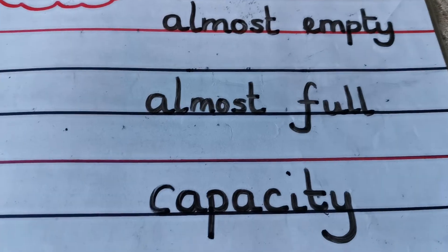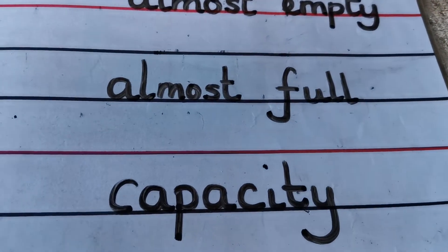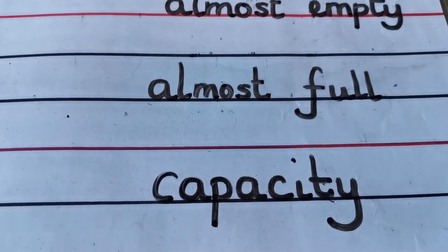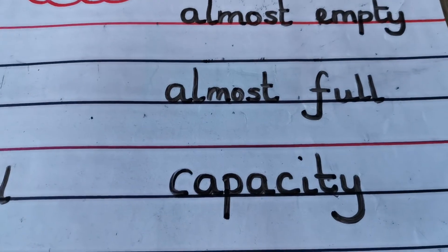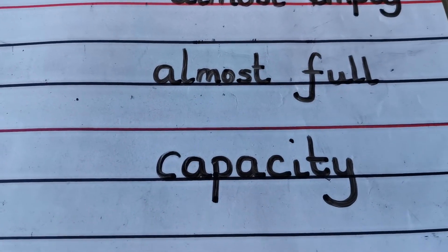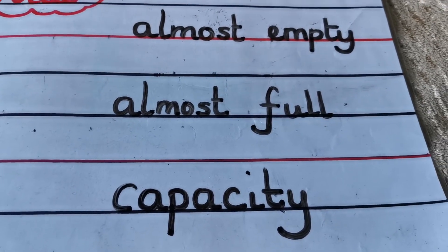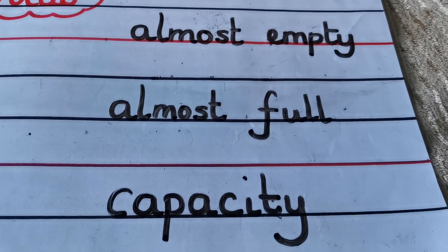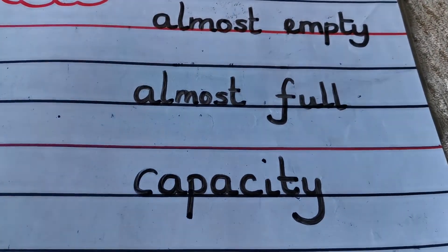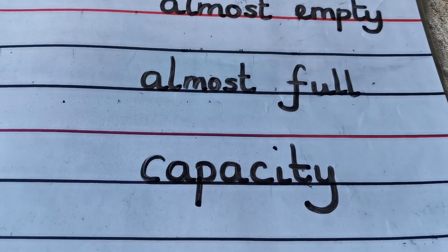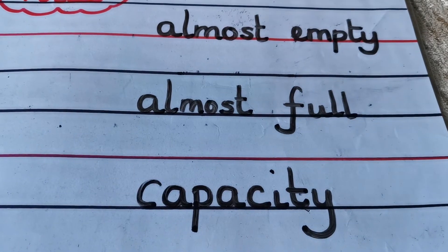Then when you've watched the second video, have a go at choosing lots of different containers and predicting — remember, predicting means having a sensible guess. In maths we use the word estimate, which means exactly the same thing. So predict or estimate which container you think will hold the most water and which will hold the least. You could put them in order and then test them to see if you were right.